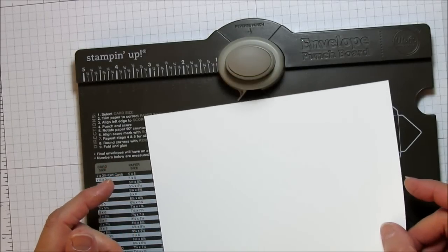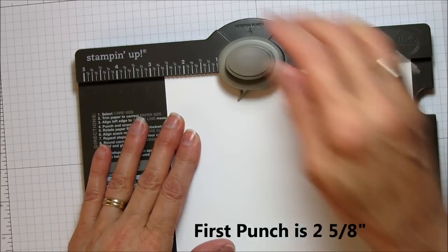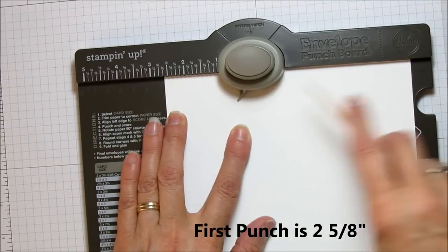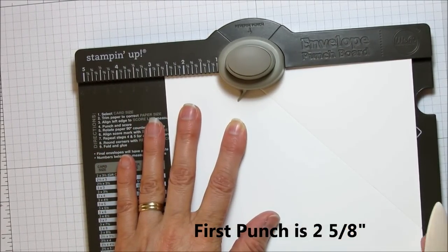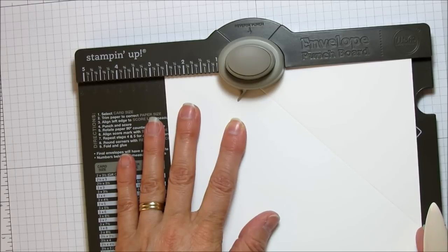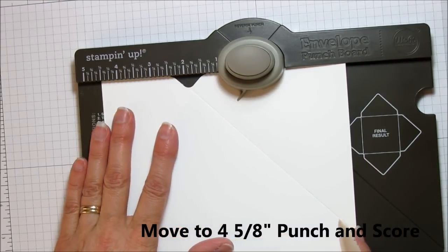So now the first thing I'm going to do is I'm going to punch at two and five eighths and then I'm going to score it. And then I'm going to move it over two inches because I want it to be two inches thick, so you go to four and five eighths.